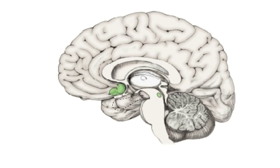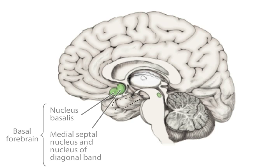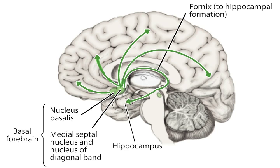In the brain, several distinct clusters of cholinergic cells are present. The basal forebrain includes major groups of cholinergic cells in the medial septal nucleus, the nucleus of the diagonal band, and the nucleus basalis. These cholinergic cells project to the hippocampus and amygdala as well as throughout the cerebral cortex.